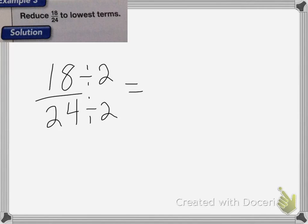It'll keep it the same, it just changes the name. So 18 divided by 2 is 9, and 24 divided by 2 is 12.